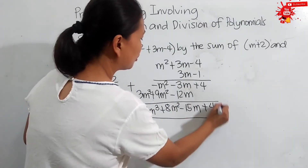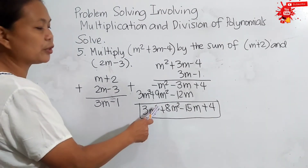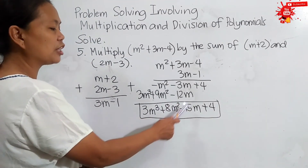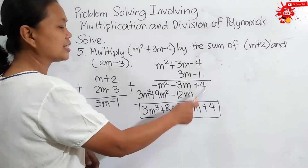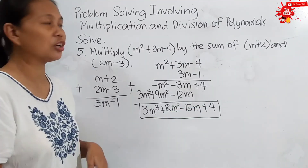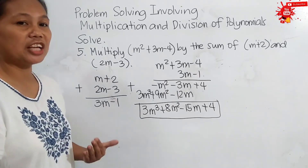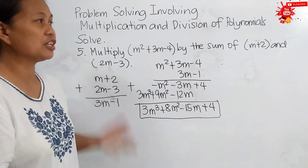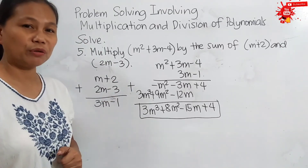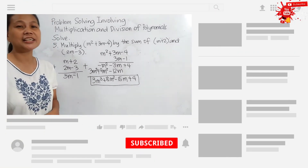So, the answer for problem number 5 is 3m cubed plus 8m squared minus 15m plus 4. We hope you learned something from this application of multiplication and division of polynomials in problem solving. Thank you for watching!